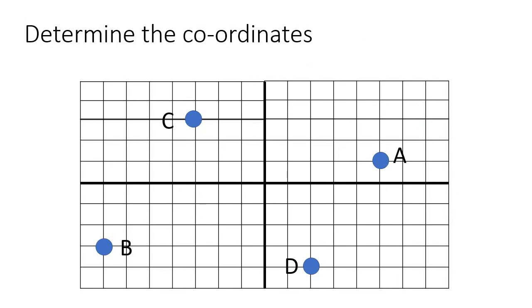Now let's just do one little activity where you just have to go find the coordinates. So let's go find the coordinates of A — you need to find its x and its y. You see it's over here, so what you could do is draw a line going back to the x-axis and back to the y-axis. If you look at this point, it's 1, 2, 3, 4, 5 — and that's positive 5 for the x — and then the y just goes 1 up, so that'll be positive 1.